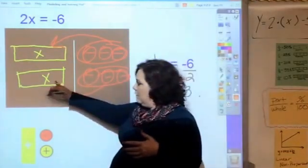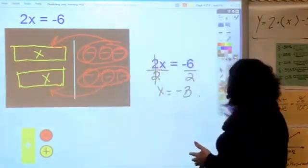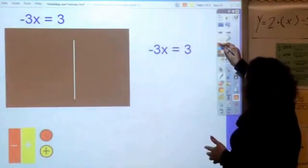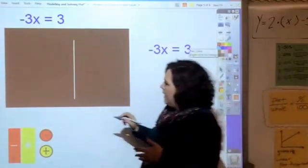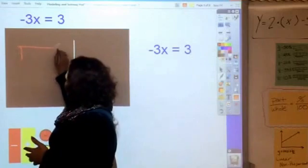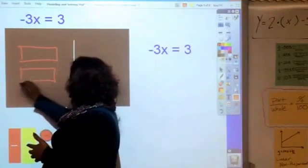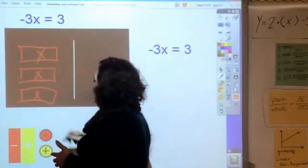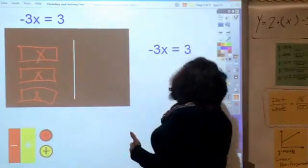Now the last one is a little bit more complicated. I have negative 3x, so I've got three x's that are negative, and that's why they're red. I've got three positives.